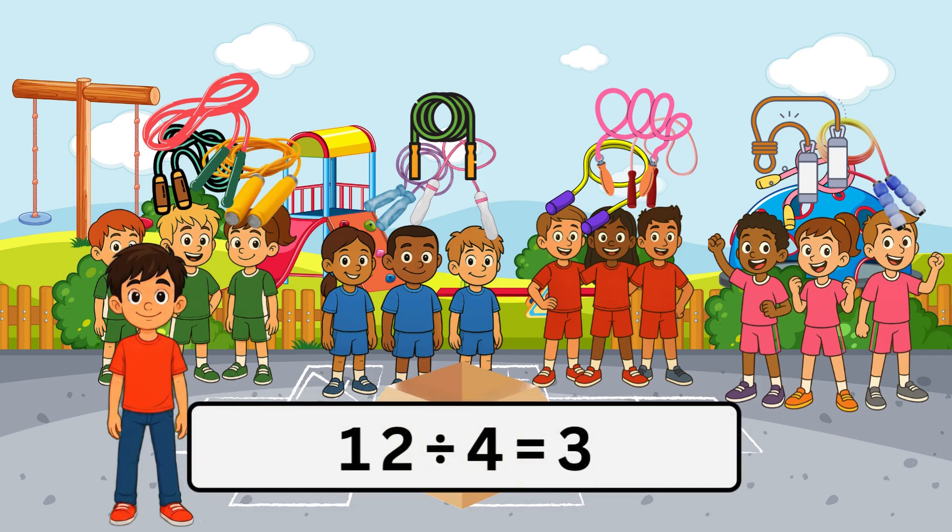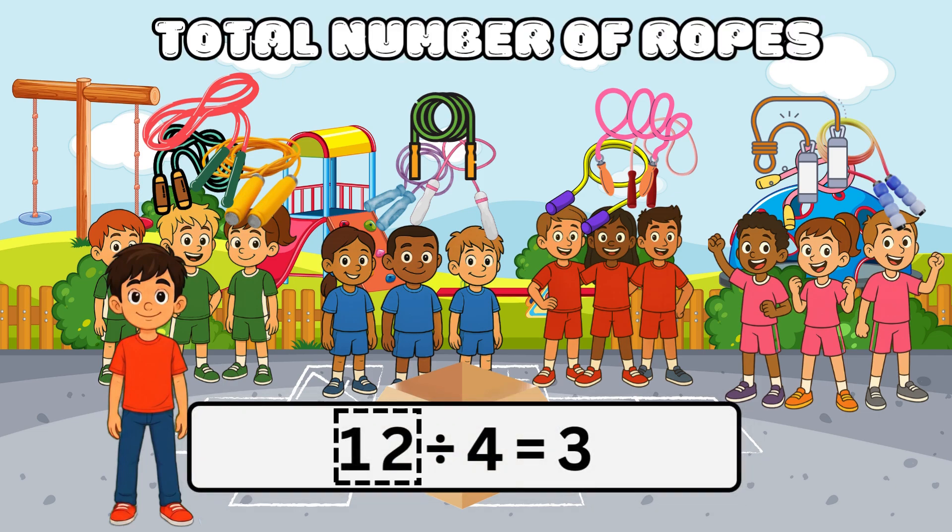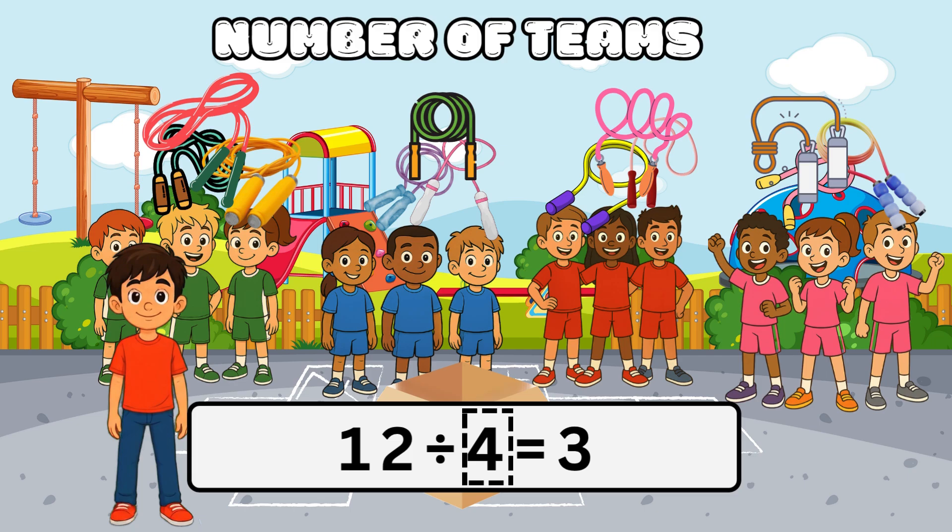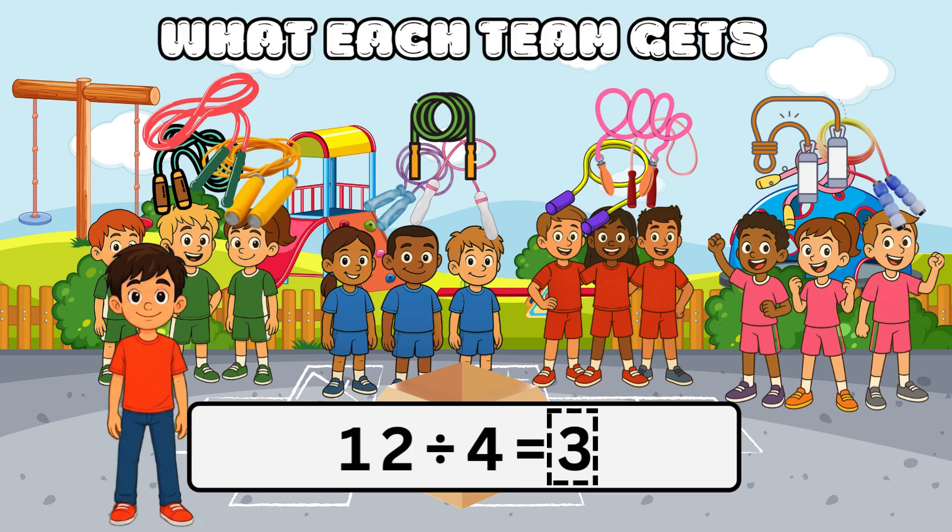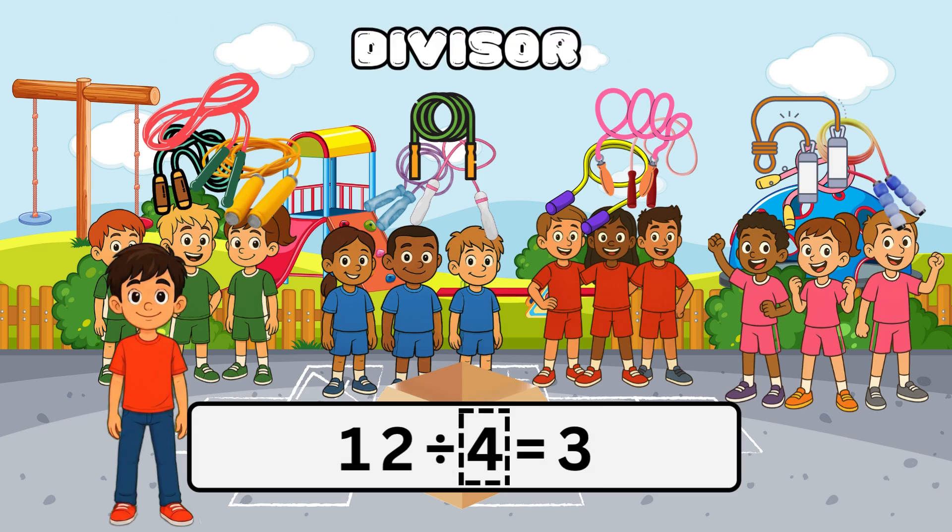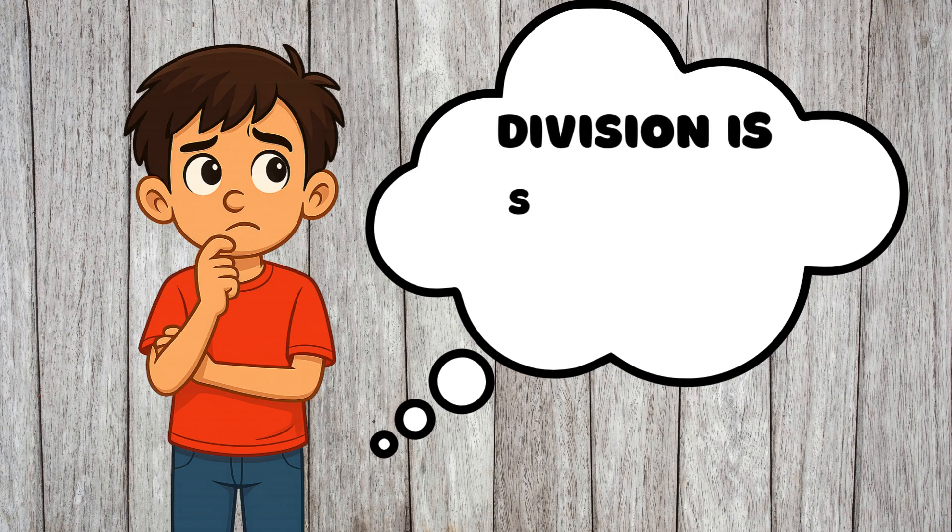That's twelve divided by four equals three. Twelve is the total number of ropes, four is how many teams, and three is what each team gets. Those three parts even have names: dividend, divisor, and quotient. Every division problem has them.